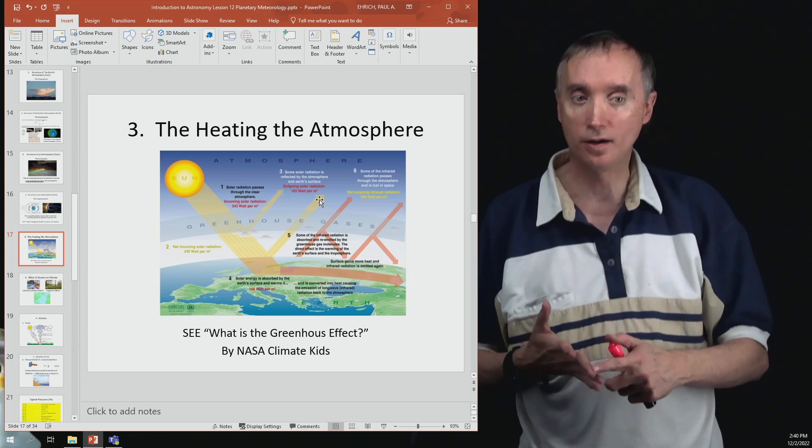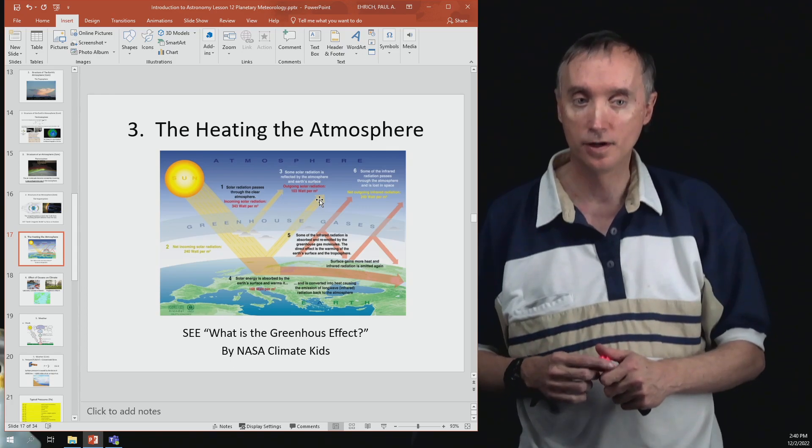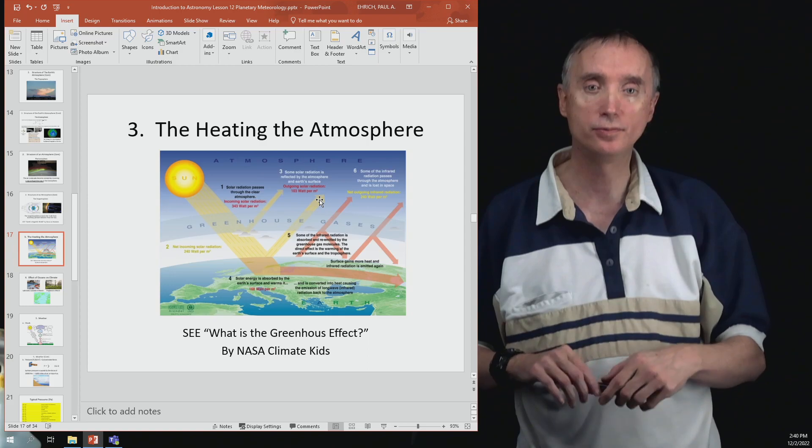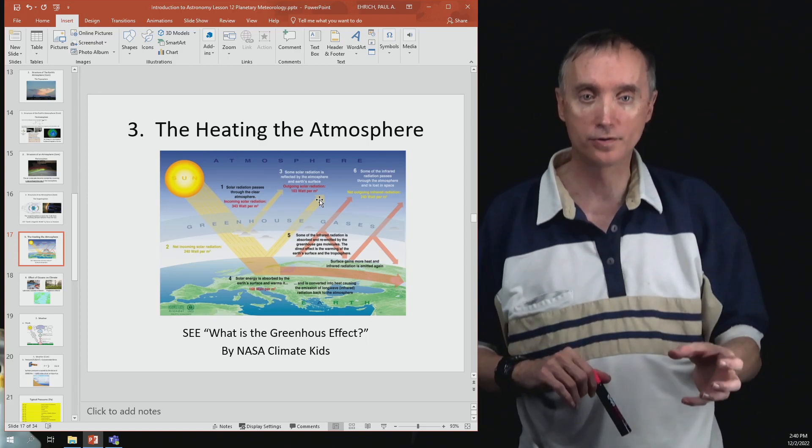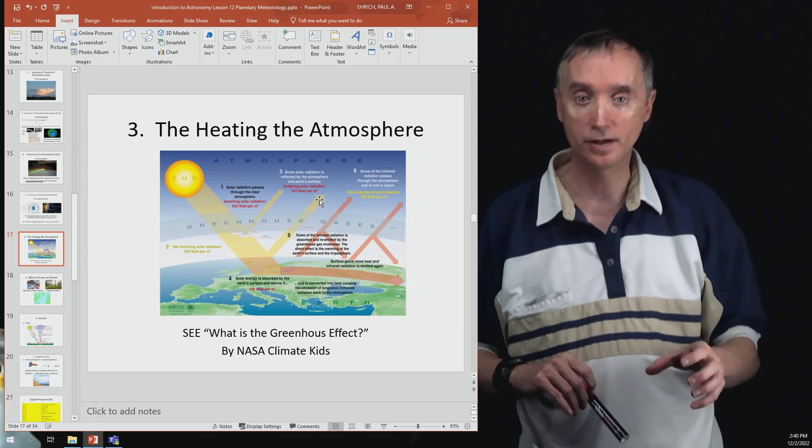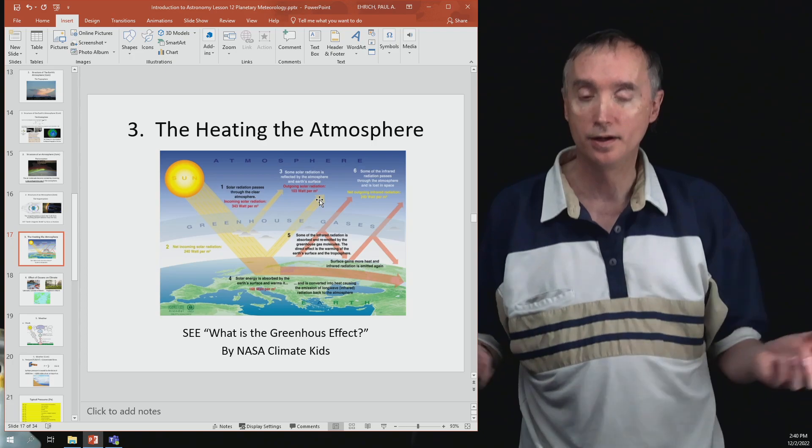Now there is some ultraviolet light that can get through our atmosphere. Most of it is blocked by the ozone layer, but let's assume that a little bit of the ultraviolet can get through. And certainly visible light can get through our atmosphere because we can obviously see here on Earth's surface.